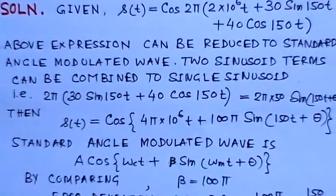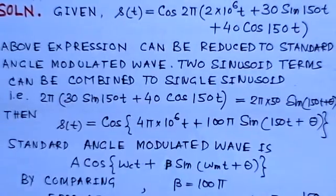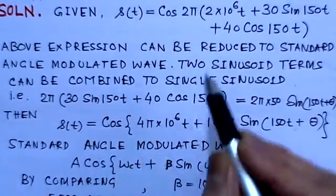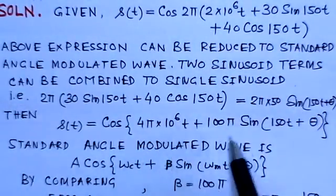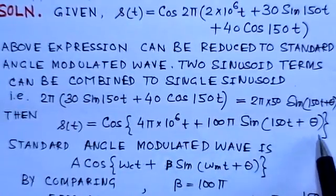Then we can write the equation for s(t). The equation for s(t) can be written here: cos(4π × 10^6t + 100π sin(150t + θ)).